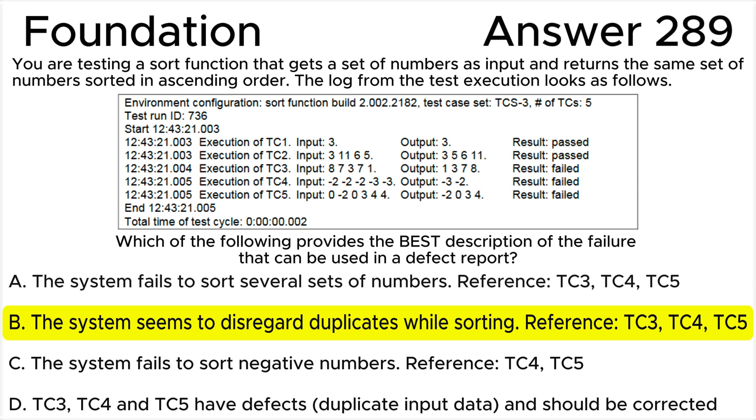ignores duplicates and sorts the list disregarding the repetitions. This is probably the cause of failures in Test Case 3, Test Case 4, and Test Case 5. Such information may help the developer to find the defect and fix it more efficiently. Option B is the most accurate and helpful description, providing specific details about the failure related to handling duplicate values.